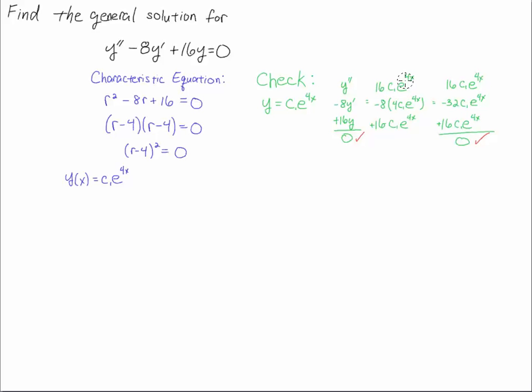So y double prime, two 4s drop down, I get a 16. Y prime, I get a 4 drops down, but then the minus 8 times the 4 gives me minus 32. And then 16y is just 16 times that. And sure enough, it does check if you add up all these terms: 16 plus 16 is 32 minus 32 is 0. So that is in fact a solution to this ODE.